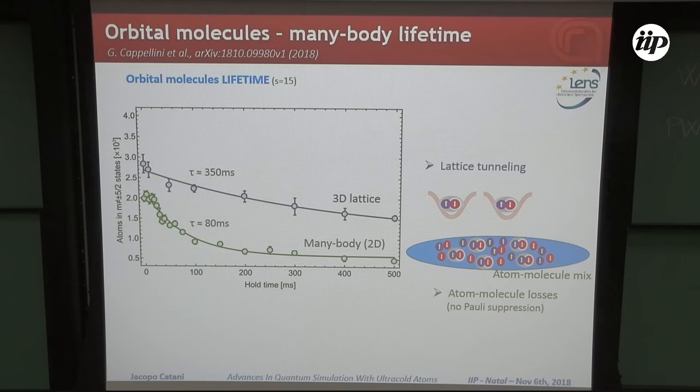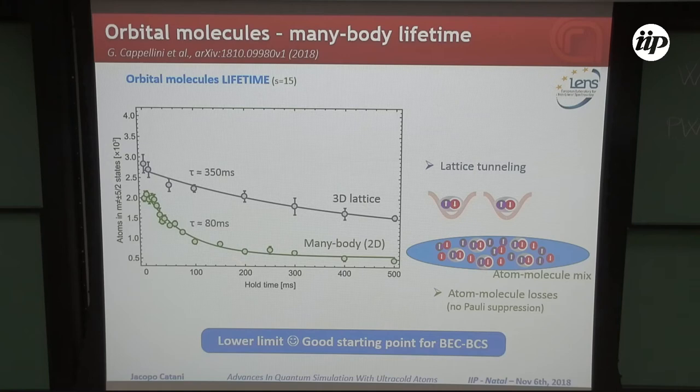If you only would have molecule-molecule interaction, which are Pauli protected, instead, if you have atom-molecule losses, you have no protection from the Pauli principle. This is a lower limit, and I think that this is a rather good starting point for studies on the BCS-BEC crossover in this multi-orbital system.